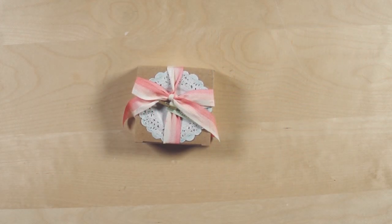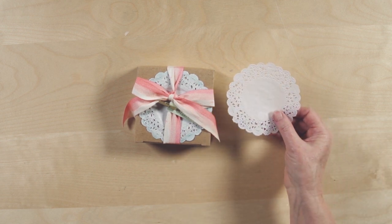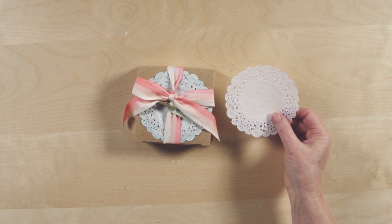Dip dyeing is a technique you can use to add color to your projects. You take something that's a neutral color, like this white doily, and dye them any color that you want.